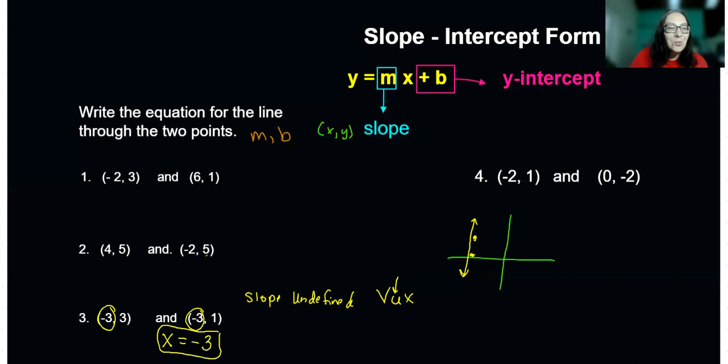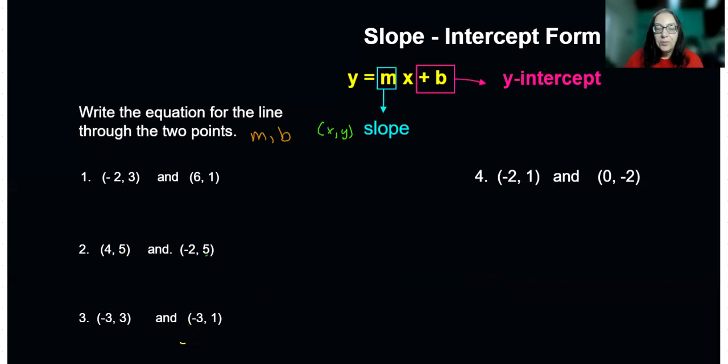All right, let's go on. One more, you guys, one more. Trying to show you something a little different in each problem. So I'm going to first of all graph it, figure out what the slope is. Here's my coordinate graph. Negative 2, 1 is right there. 0, negative 2 is right here. When I draw the line, my slope is going to be negative, so m is negative.